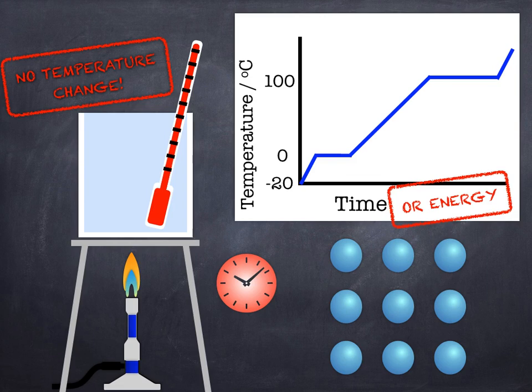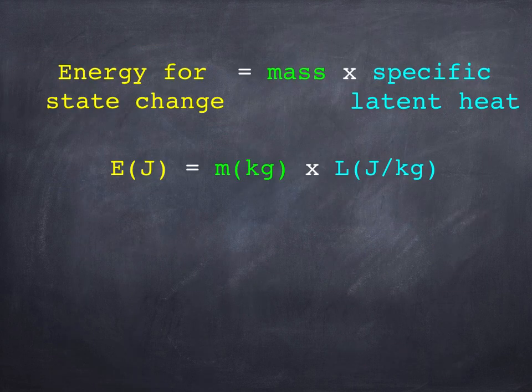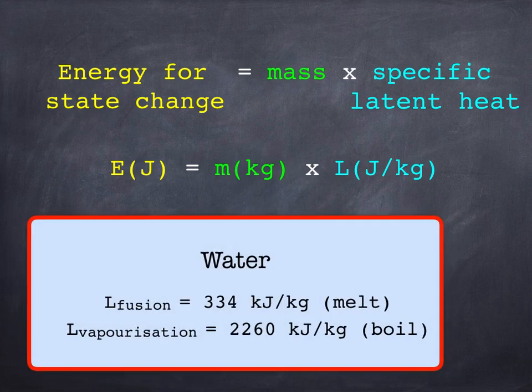As of course you'd expect, there's an equation for this - this is physics after all. And here it is: fairly straightforward. The energy you need for the state change equals the mass of the material you have multiplied by the specific latent heat for that material.